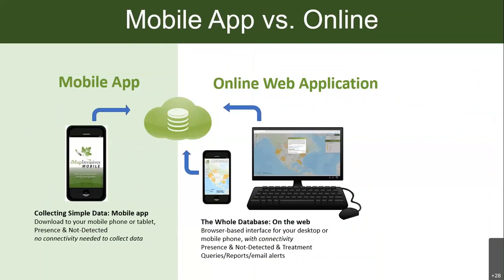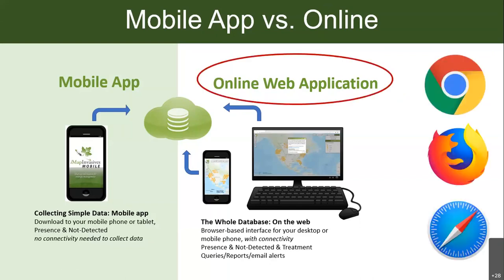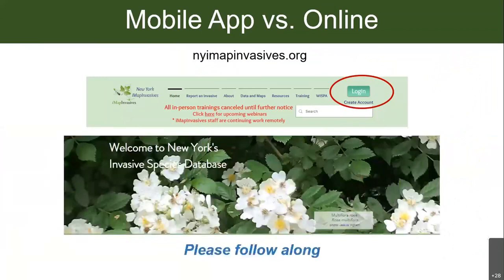The whole database exists on the web — you can view data, export data, and do all sorts of other things on the web application, accessed through your browser on your computer or phone. The mobile app is separate and is designed for simple, quick data collection in the field for presence and not-detected points. I'm going to start with account setup, which is done on the online web application. We recommend using Google Chrome, Mozilla Firefox, or Safari.